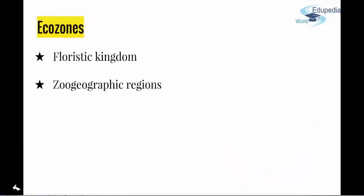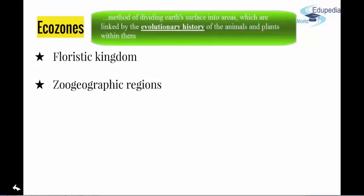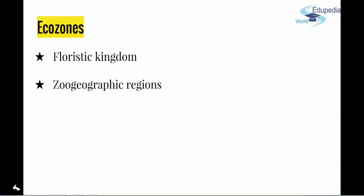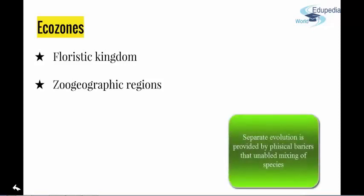Ecozones are basically a method of dividing Earth's surface into areas which are linked by the evolutionary history of animals and plants within them — that's really important. So evolutionary history is specific to ecozones. They delineate large areas of Earth's surface within which organisms have been evolving in relative isolation over a long period of time, separated from one another by geographical features such as oceans, deserts, or mountain ridges — something that represents a barrier to migration and mixing of different populations.